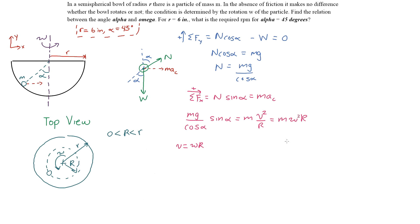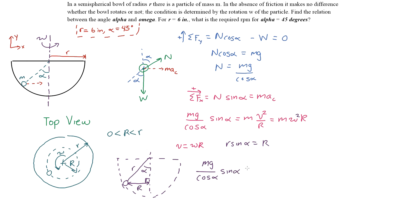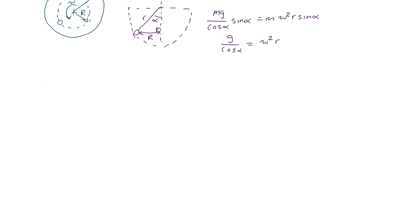The next step is finding big R — that's a simple geometry problem. Looking at the diagram, we have a right triangle relating little r to big R: r·sin(α) = R. Plugging everything in: (mg/cos(α))·sin(α) = m·ω²·r·sin(α). The sine alphas cancel, as does the mass, leaving g/cos(α) = ω²·r. Our goal is to find RPM, so we need to isolate omega.